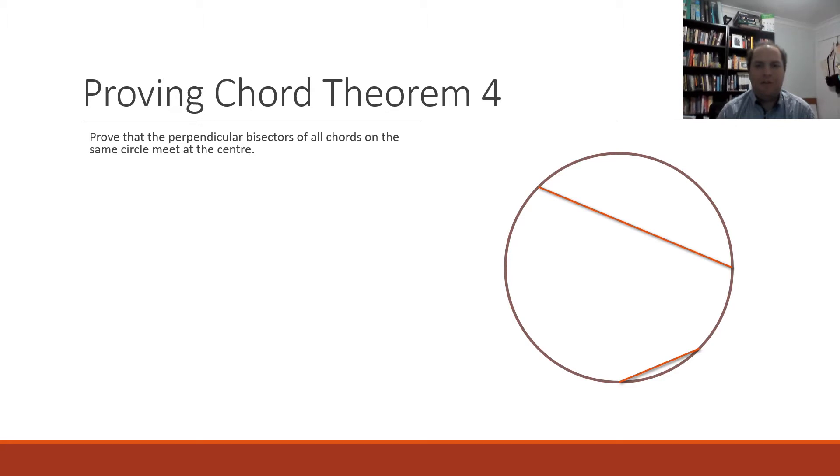Now we have to prove that the perpendicular bisectors of our chords on the same circle meet at the center. So looking at our diagram here, let's label our chords. We've got AB and CD.